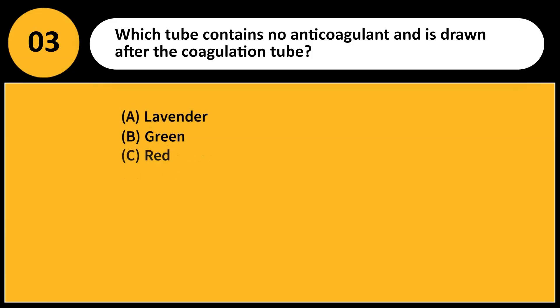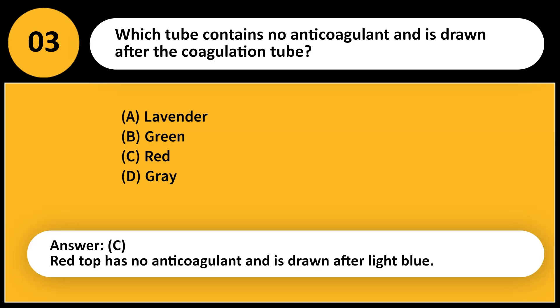Which tube contains no anticoagulant and is drawn after the coagulation tube? A. Lavender. B. Green. C. Red. D. Gray. Answer: C. Red top has no anticoagulant and is drawn after light blue.